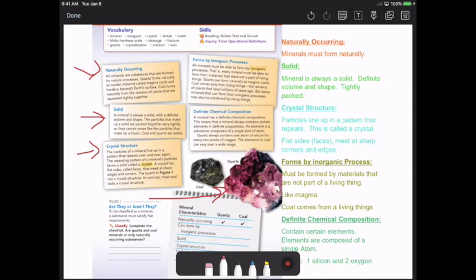Formed from inorganic processes. So what that means is it must be formed by materials that are not living. Okay, they can't be living. So it must be formed from magma. So coal though comes from living things. Coal comes from plants. Over millions of years they get packed together and forms coal. So coal is not a mineral because it's not formed by inorganic processes. Inorganic processes again are like magma or lava.